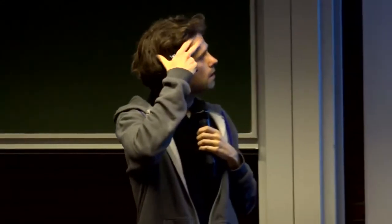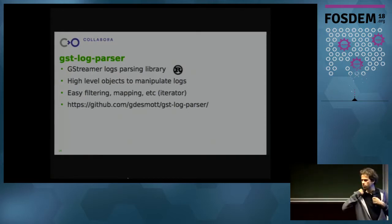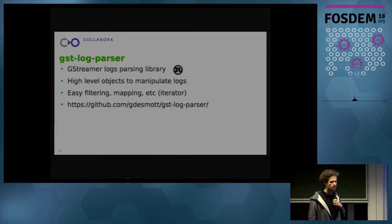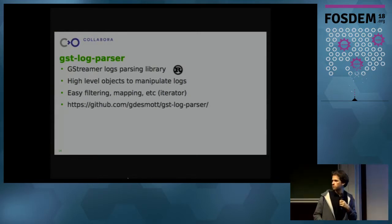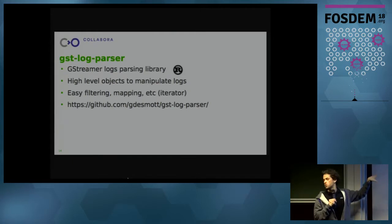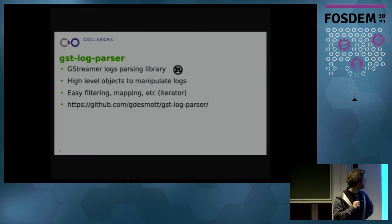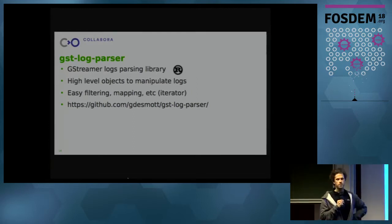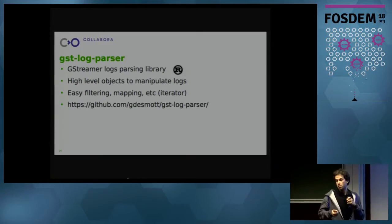Another one I started a few months ago is GST log parser. My goal was that I often found myself writing small Python applications to parse logs and compute metrics — always doing very hacky Python scripts. I said let's try to make something more reusable and a bit cleaner. It was also a time when I wanted to learn Rust, so I wrote it in Rust. This is literally my first Rust project, so the code may not be perfectly written, but it's been proved useful so far. It's a high-level parsing library which will read your log and create high-level objects, giving you an iterator in Rust from which you can easily filter for a specific category, object, line, or whatever.